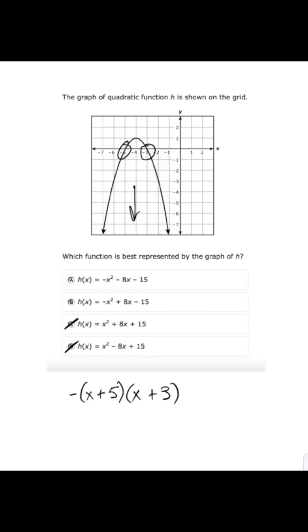x times x is x². x times 3 is +3x. 5 times x is +5x. And 5 times 3 is +15.